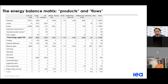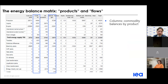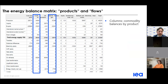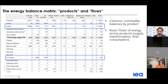Here is a version of the IEA energy balance. It is a two-dimensional matrix composed of products and flows. Products are shown across the top in the columns, and flows are shown down in the rows. Within a single column, we see the commodity balance for an individual fuel such as crude oil — all of the production, trade, supply, transformation, and consumption of that specific fuel. Within the rows, we see each flow of energy across all products — for instance, all energy product exports or all fuels entering and leaving an oil refinery.